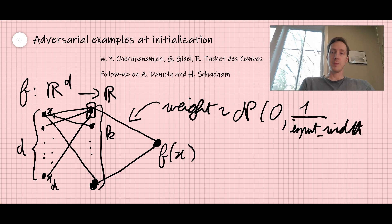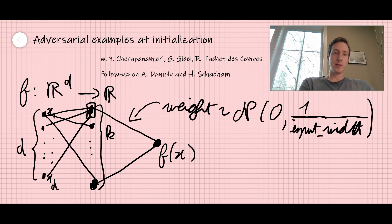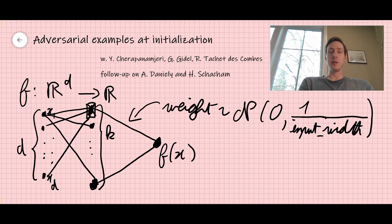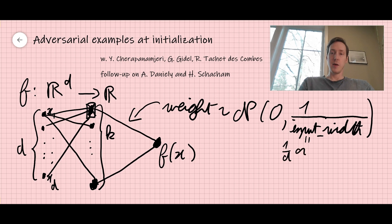The weights have variance 1 over the input width. For the hidden layer, the input is a d-dimensional vector, so the variance is 1/d. For the second layer — the linear output layer — the input width is k (the number of hidden neurons), so the variance is 1/k. So the variance is either 1/d or 1/k.